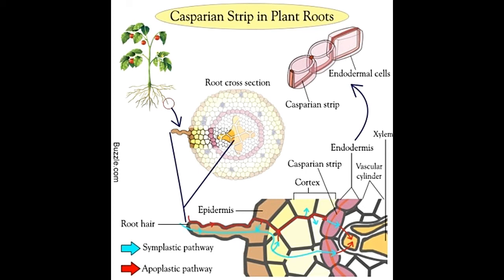By forcing substances to shift from the apoplastic to the symplastic pathway, the Kasparian strip allows the plant to control how much water and minerals it absorbs from the soil. There is also another method called active transport, by which minerals are transported from the soil into the vascular cylinder in opposition to their concentration gradient — contrary to normal diffusion, which moves salts from higher concentration in the soil to lower concentration in the root. In conjunction with the Kasparian strip, this causes a buildup of salts inside the vascular cylinder, since the impermeable strip prevents them from flowing back out. This high salt content encourages the flow of more water from the soil by osmosis, thus maximizing water absorption.